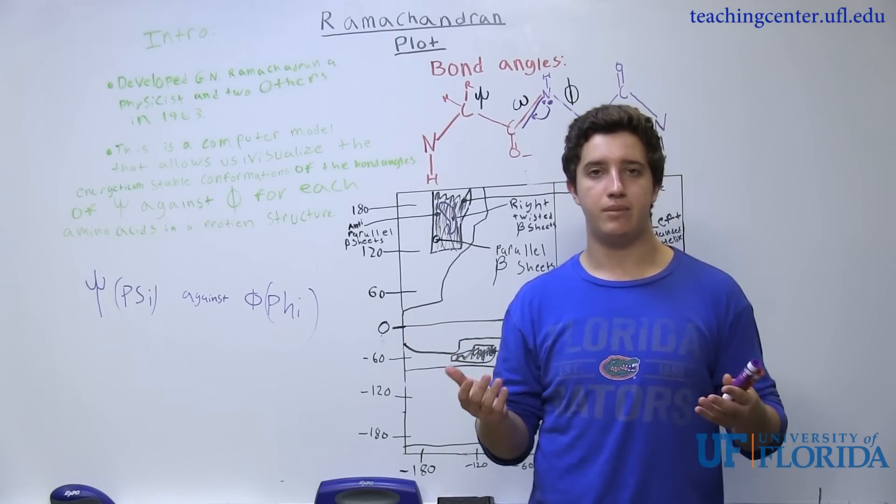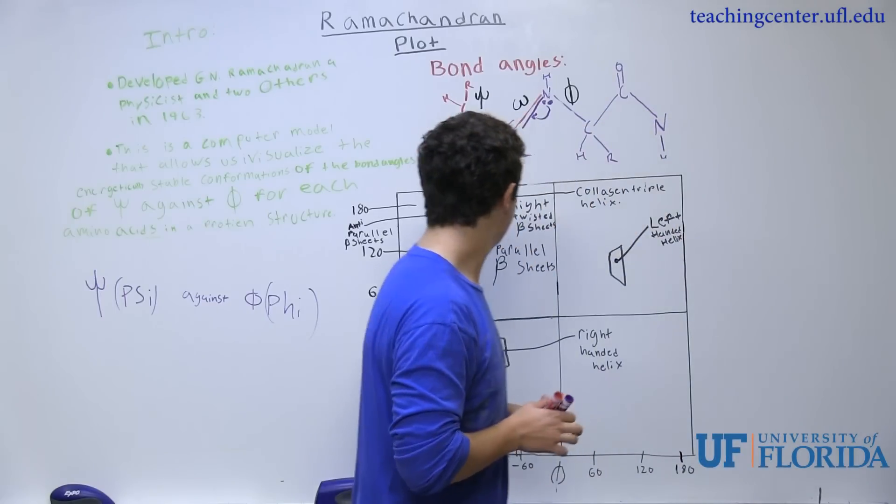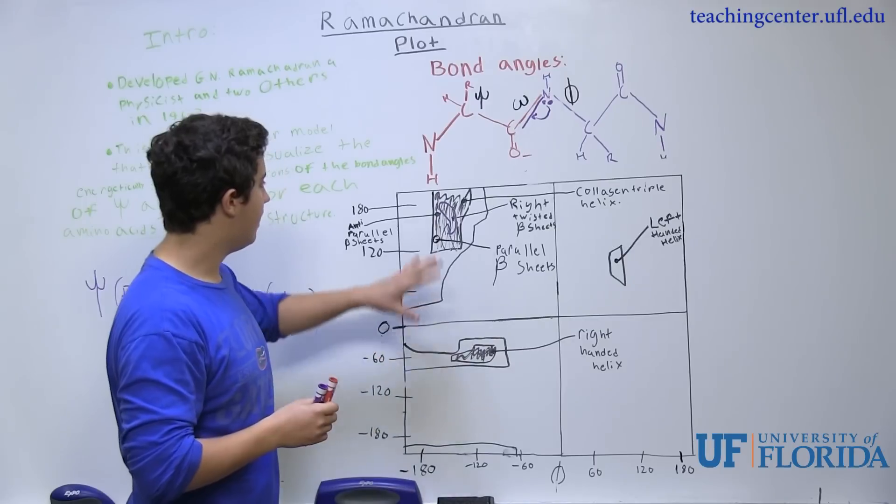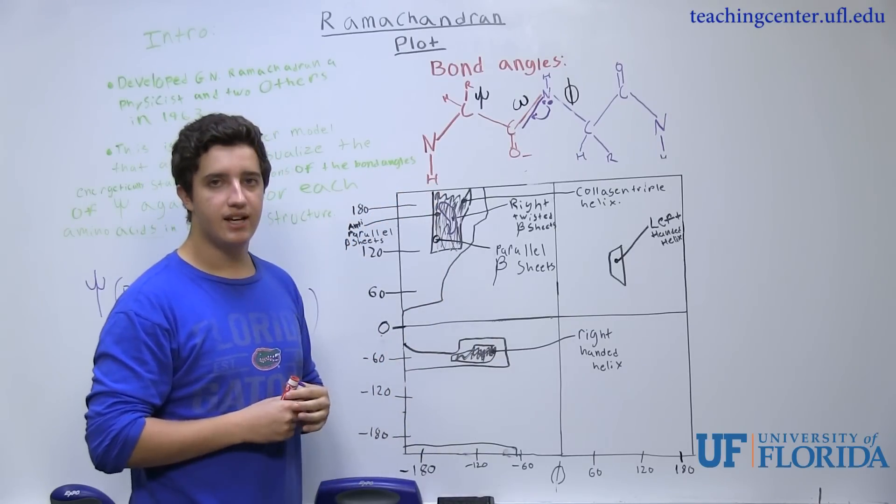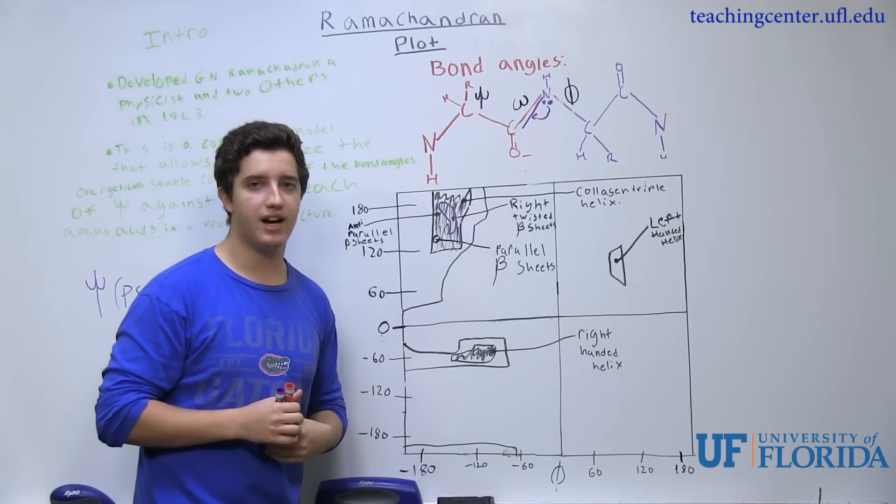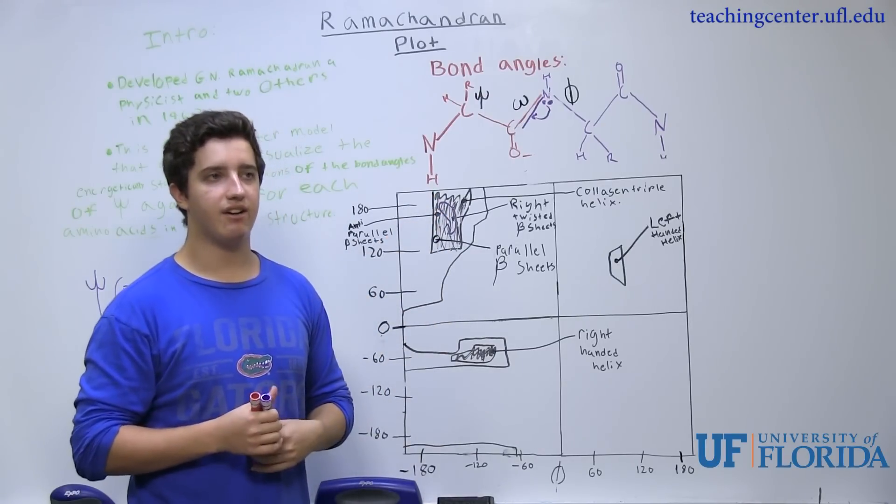Knowing this, we can look at the Ramachandran plot. Looking at this, we see a couple things pop out. One is that we see a lot of amino acid conformations in this region. And this is because of steric hindrance.